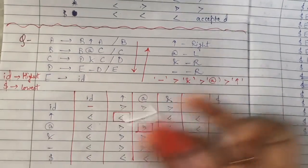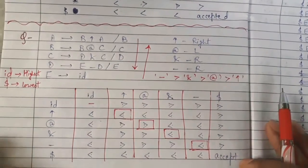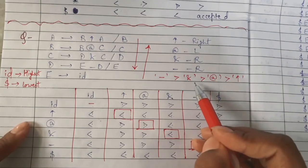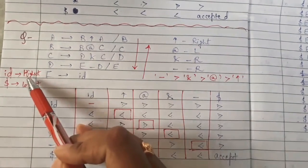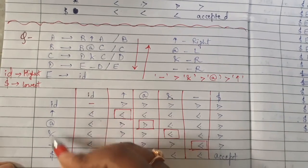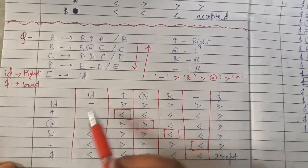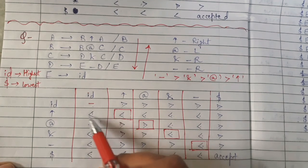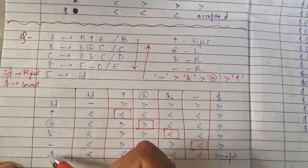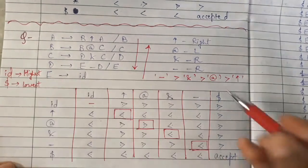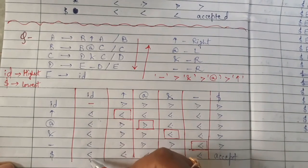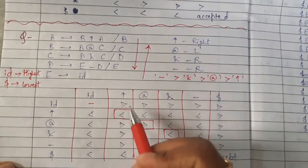Let's fill the table. Since id has the highest precedence, in the column of id all operators below it have less precedence than id, so we write less-than signs in the entire id column. Since dollar has the lowest precedence, all operators have higher precedence than dollar, so we write greater-than signs in the entire dollar column. The dollar-dollar cell is the acceptance state.